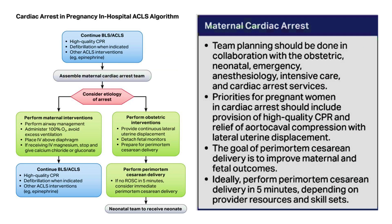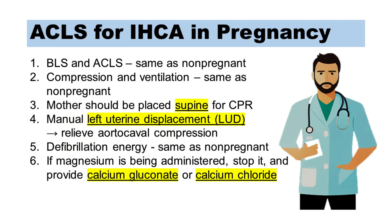The ACLS algorithm for in-hospital cardiac arrest in pregnancy includes the following steps. Step 1: Perform BLS and ACLS as would occur in any adult patient. Step 2: Chest compression and ventilation recommendations for the pregnant patient are the same as for non-pregnant patients. Step 3: The mother should be placed supine for chest compressions. Step 4: Manual left uterine displacement should be used to relieve aortocaval compression during resuscitation.